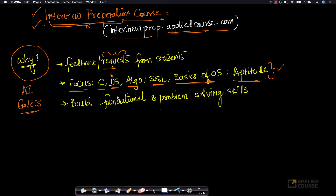Some of these concepts are important not just for software development engineer roles but also for other related roles. For example, if you're interviewing for a data scientist or machine learning role, especially at top-notch product-based companies, you might have one or two rounds covering programming, data structures, and algorithms.